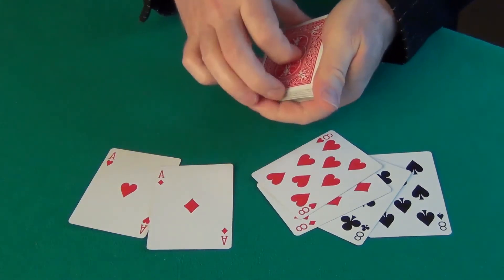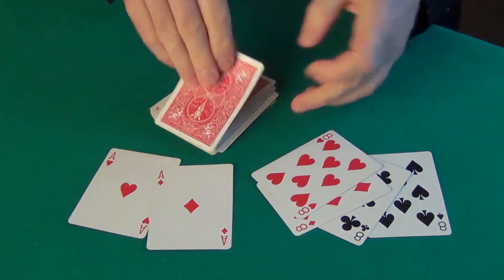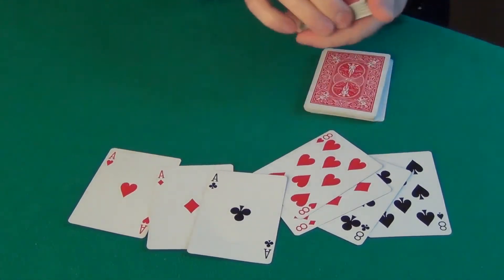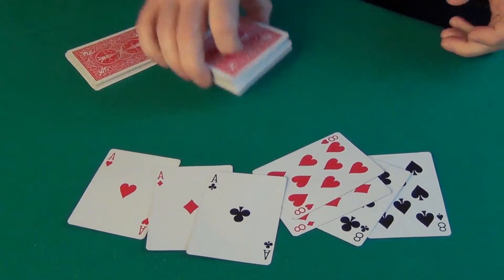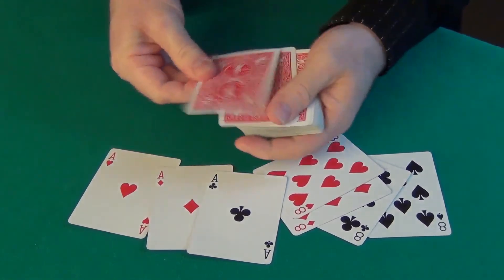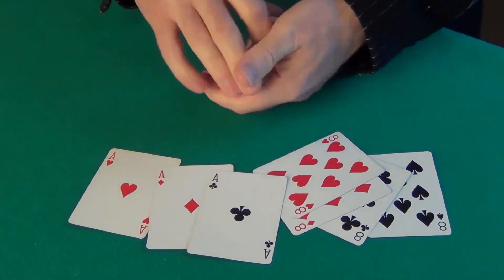And for the clubs, we just cut the cards. We get the clubs there. And for the last card, the Ace of Spades. This should be right here. The last Ace. The Ace of Spades.